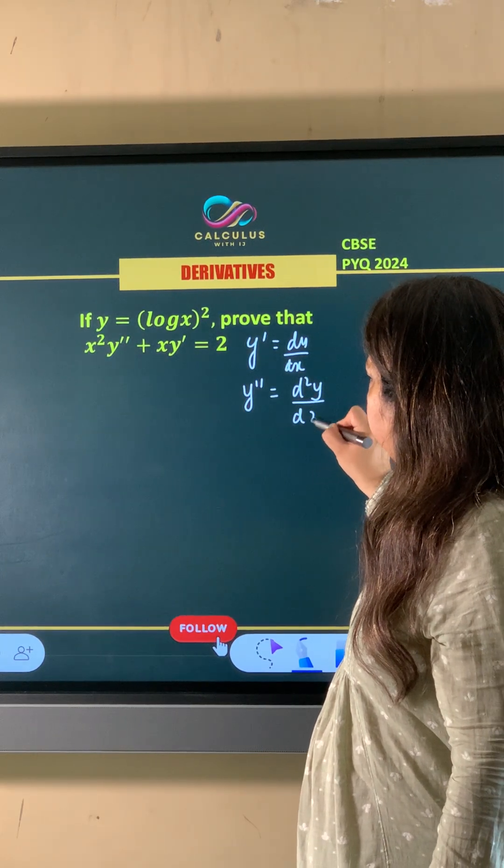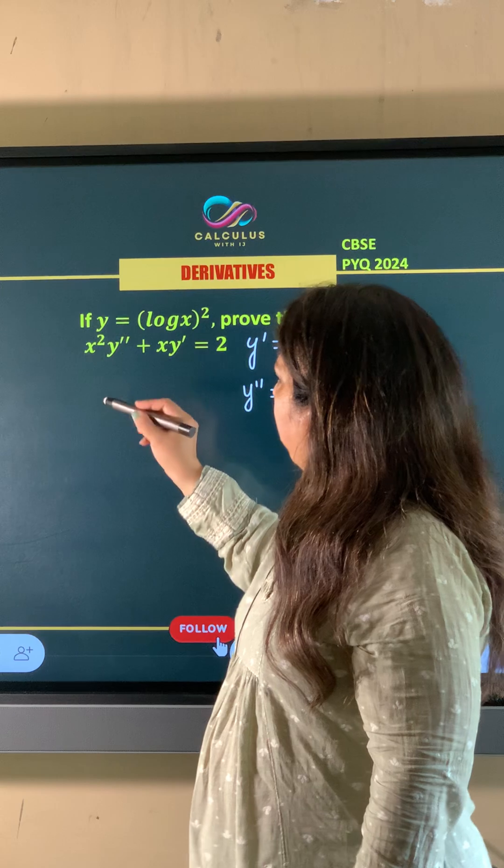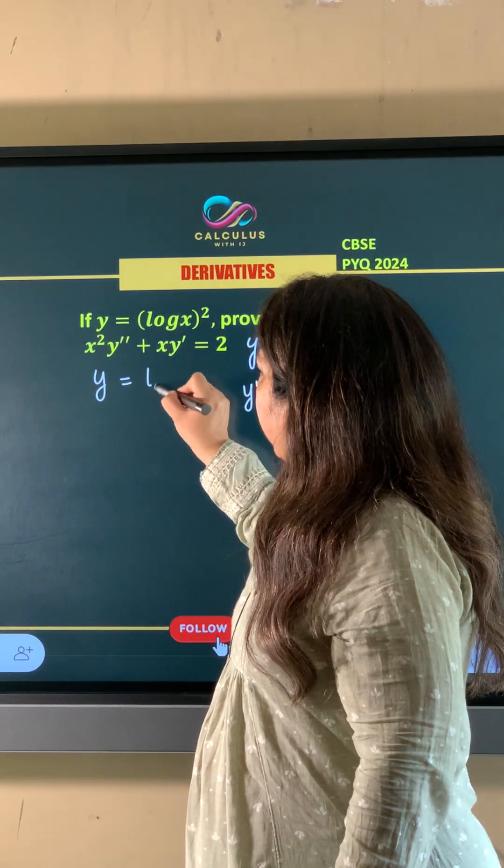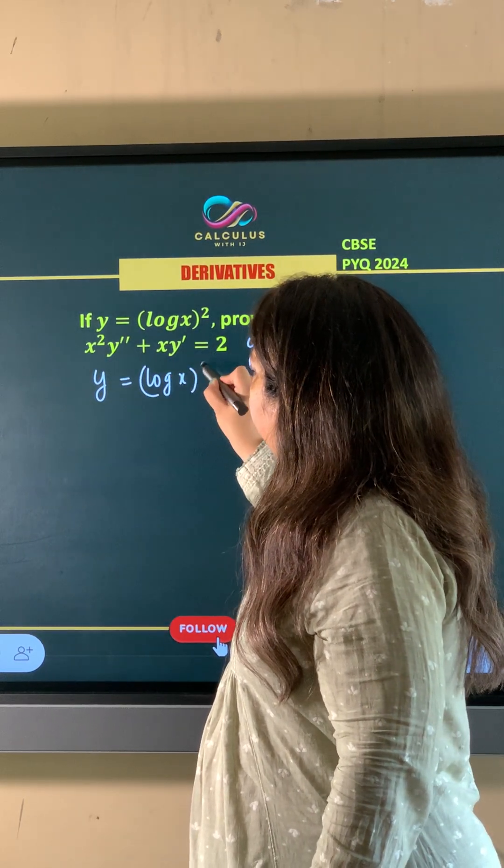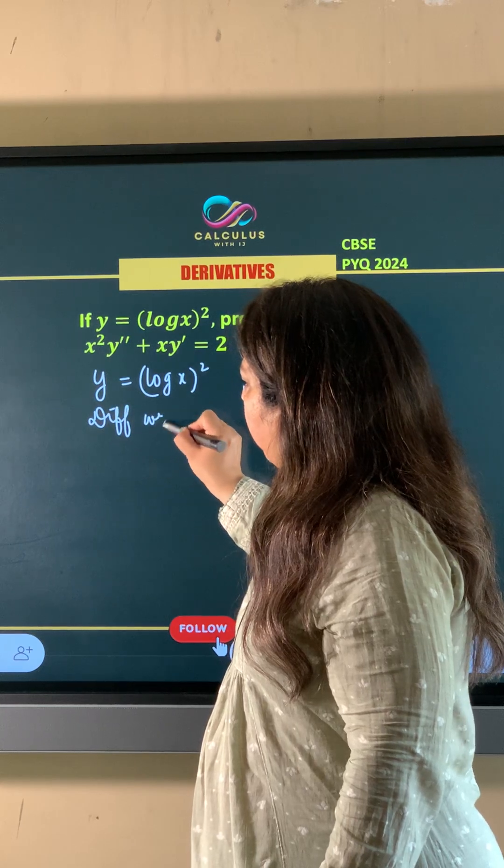Second order derivative means derivative of derivative. To, yahan pe Y is equal to log X whole square is given, we will differentiate both sides with respect to X.